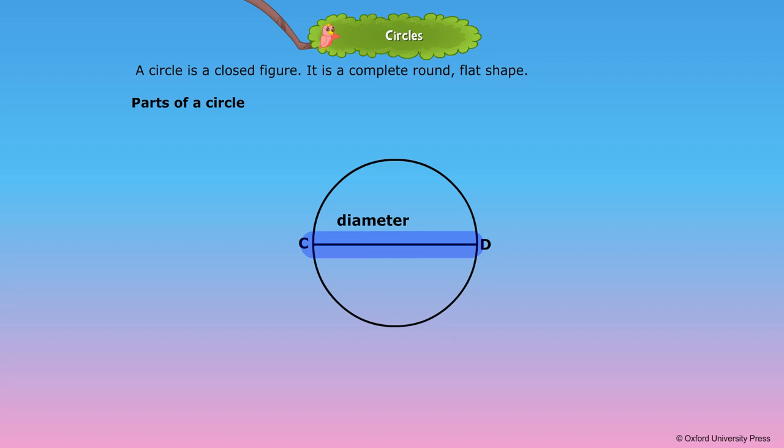The diameter is the longest chord of a circle. The diameter of a circle is twice the radius.